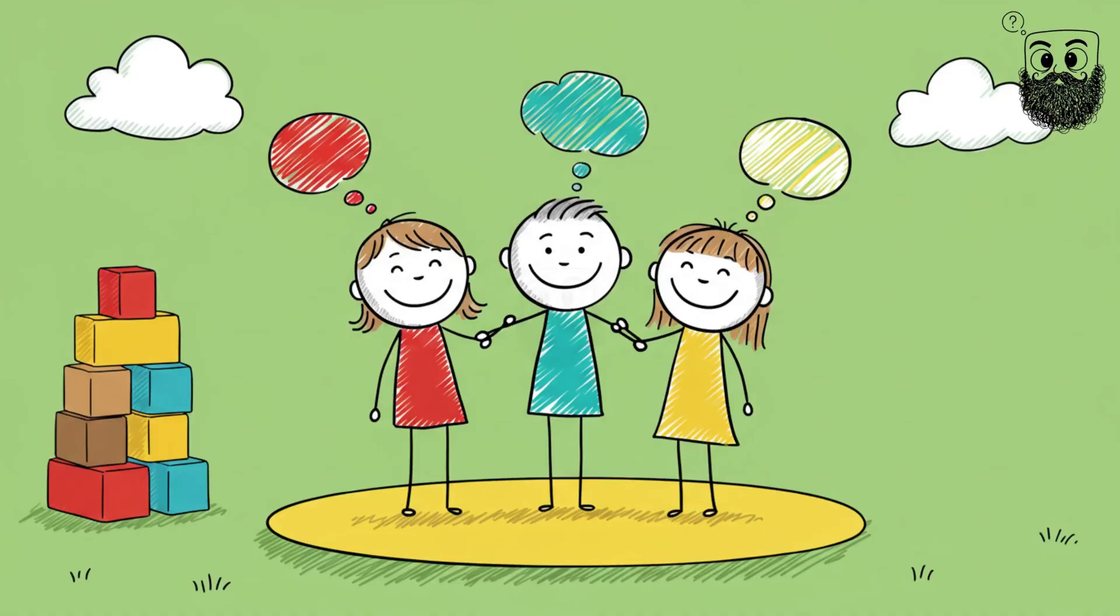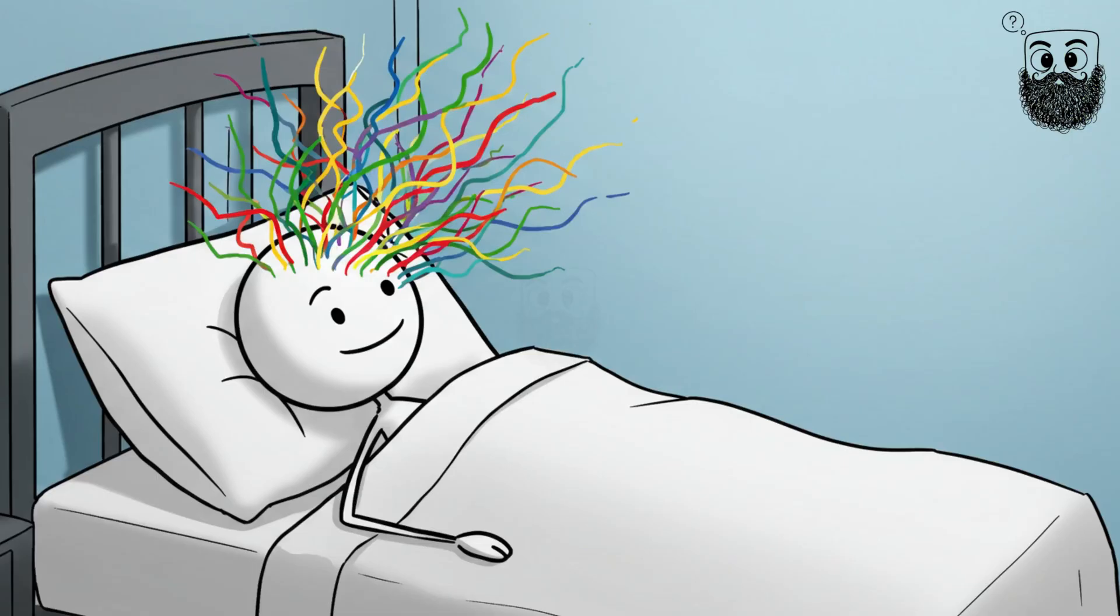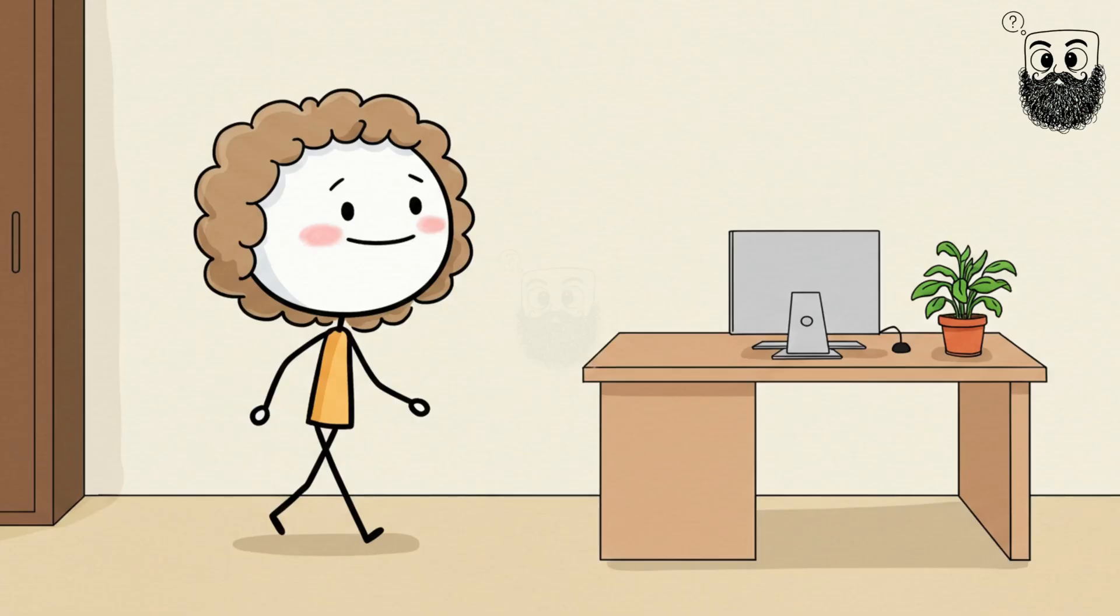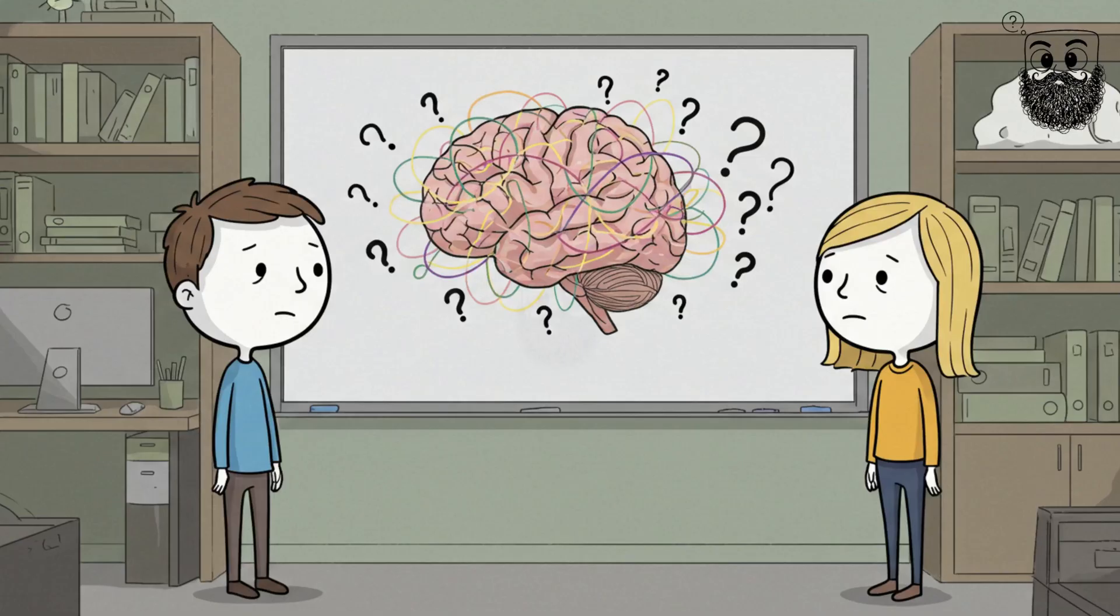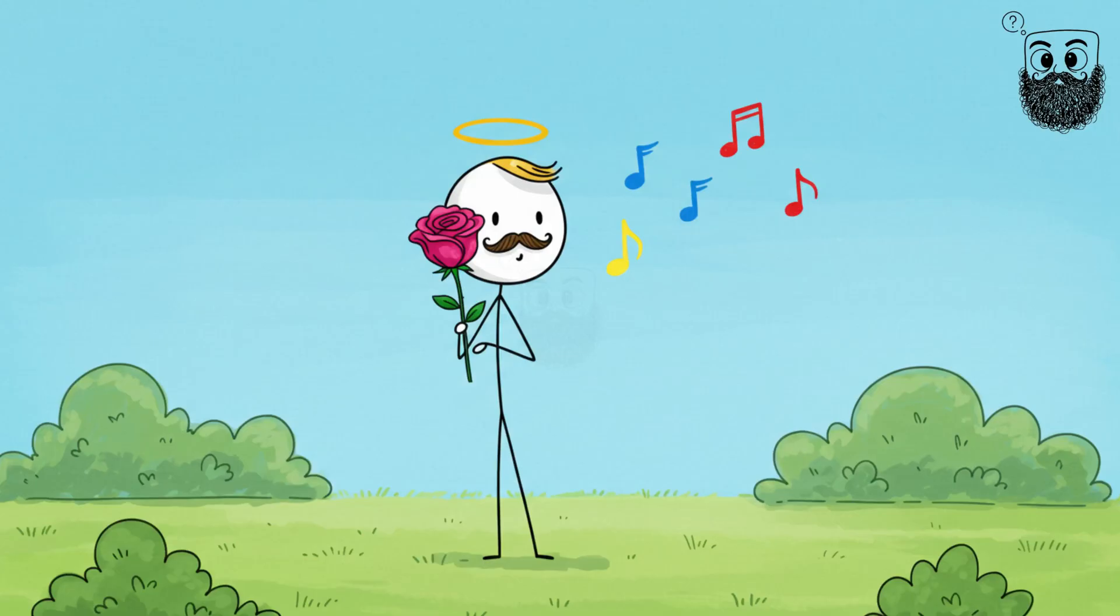We all might have had this as babies. Scientists think newborn brains start with these connections, but most lose them as we grow. It also runs in families. But scientists still can't explain why this happens, or why certain senses get mixed up instead of others.